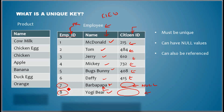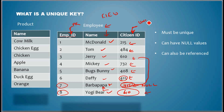The point is: when employees are hired they need an employee ID, but they don't need to have a citizenship ID right away. However, if they do have a citizenship ID, it cannot be a duplicate — you can't have two employees sharing the same citizenship ID. So citizenship ID must be unique if present, but null is allowed.